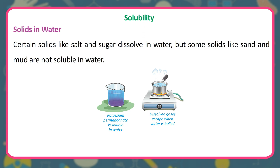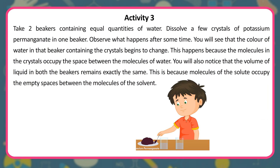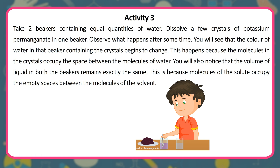Certain solids like salt and sugar dissolve in water, but some solids like sand and mud are not soluble in water. Potassium permanganate is soluble in water. Dissolved gases escape when water is boiled. Activity 3: Take two beakers containing equal quantities of water. Dissolve a few crystals of potassium permanganate in one beaker and observe what happens after some time. You will see that the color of water in that beaker begins to change, because the molecules of the crystals occupy the spaces between the water molecules. The volume of liquid in both beakers remains exactly the same, because the solute molecules occupy the empty spaces between the solvent molecules.